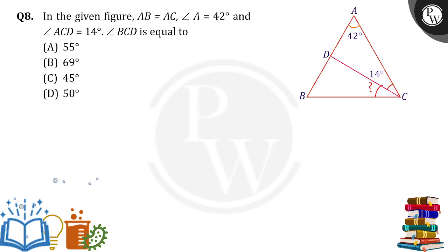Now first of all, in triangle ABC, the given value is AB equals AC. When AB equals AC, then opposite angles are equal: angle C equals angle B.